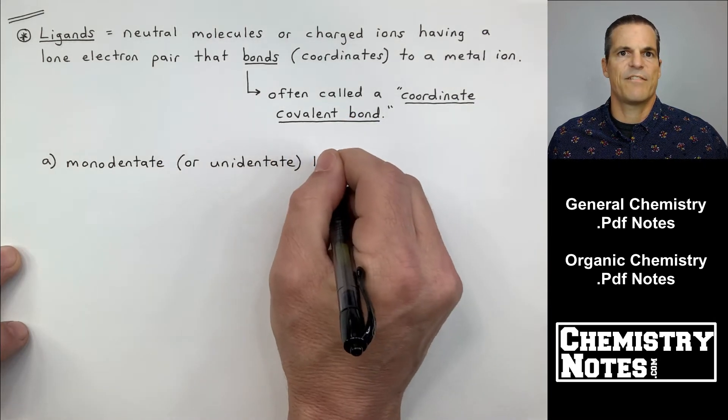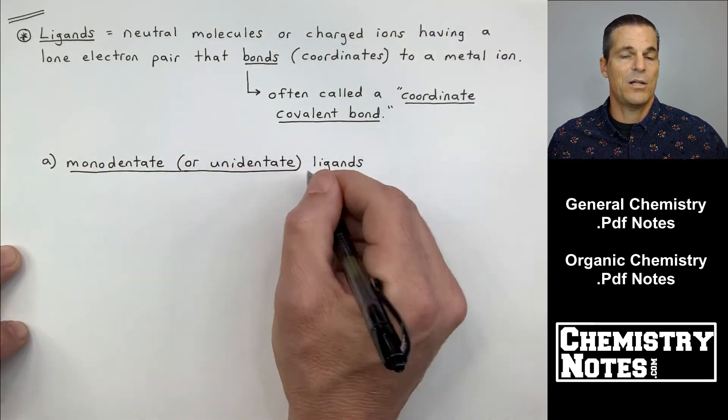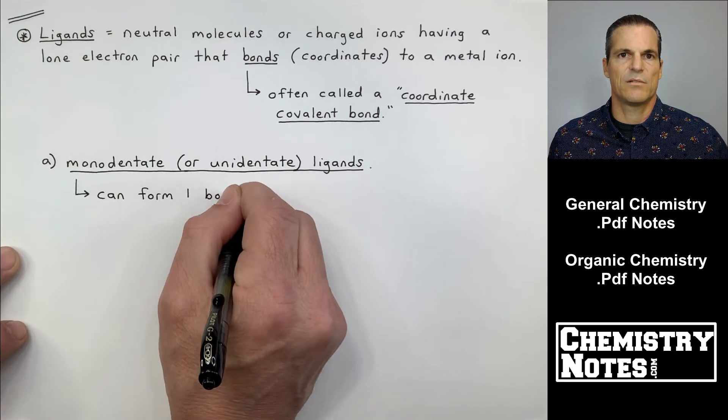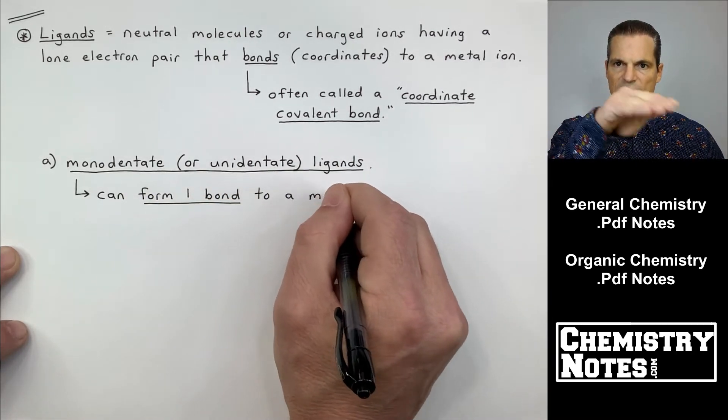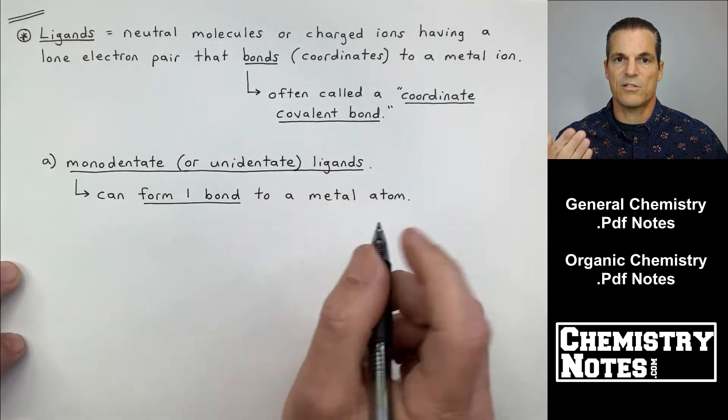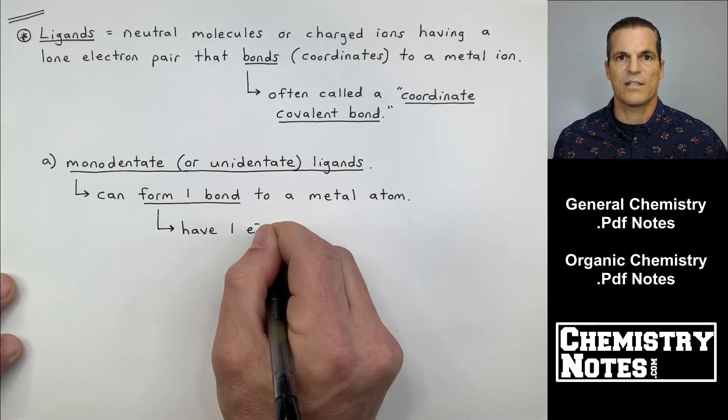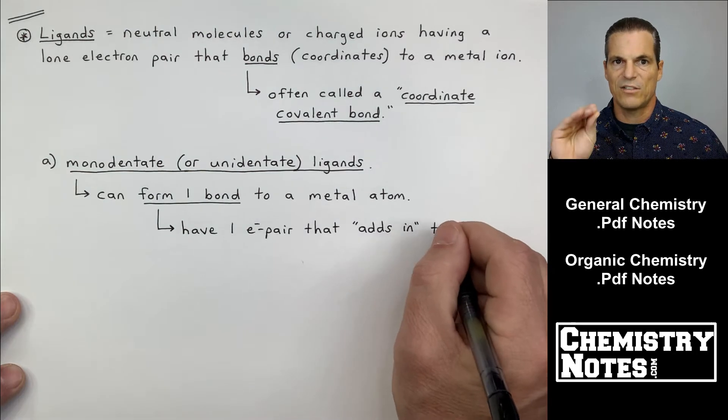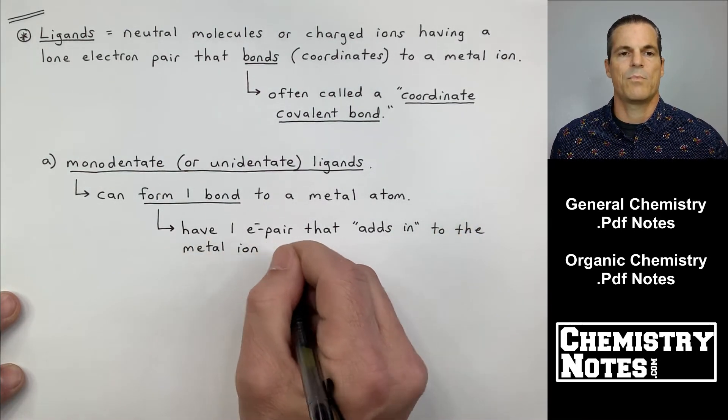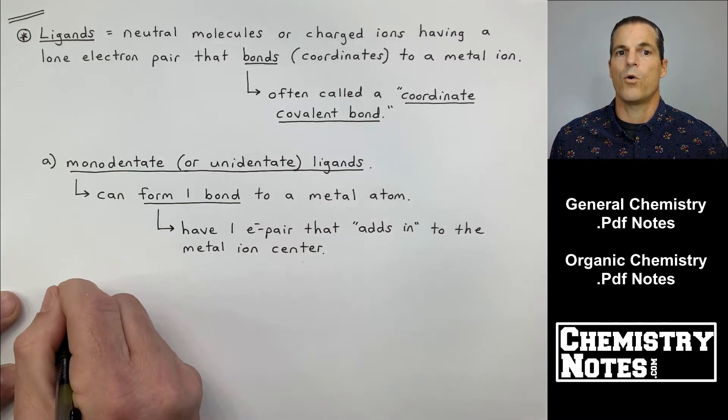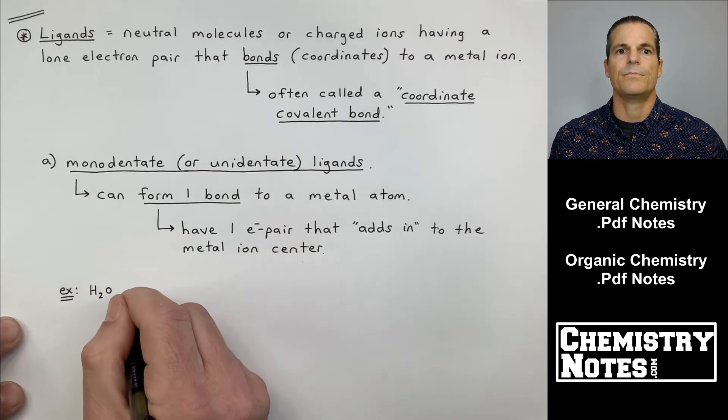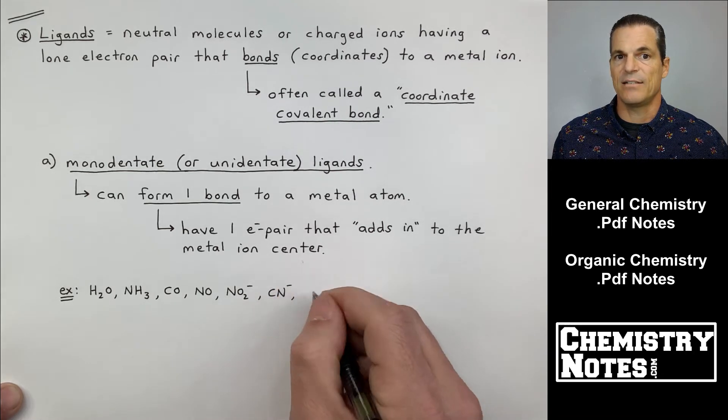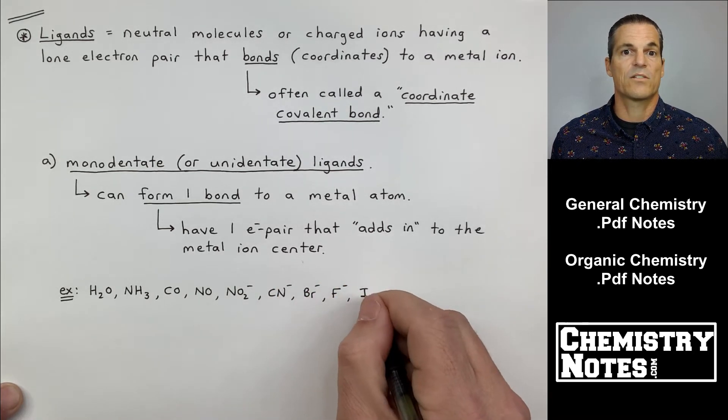So we can have several different types of ligands. We can have monodentate ligands. We can have bidentate ligands or we can have polydentate ligands. A monodentate or unidentate ligand is just how it sounds. It is a ligand that is going to attach at one point. So NH3 and Cl minus, the two that we just saw in our working example on the previous page, those are monodentate. They have one attachment point where they donate in and bond to the metal ion at one attachment point. So it says monodentate can form one bond to a metal atom. Underneath where I've underlined form one bond, it says they have one electron pair that adds in to the metal ion center forming this coordinate covalent bond.